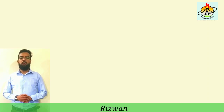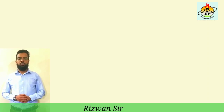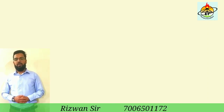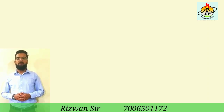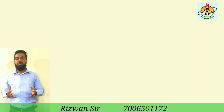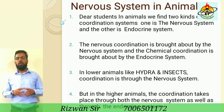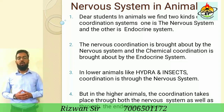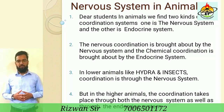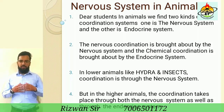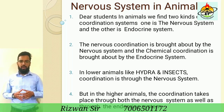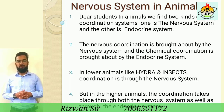Nervous Coordination. Assalamu Alaikum! Today our topic is Nervous System in Animals. In animals we find two kinds of coordination systems: one is the nervous system and the other is the endocrine system.